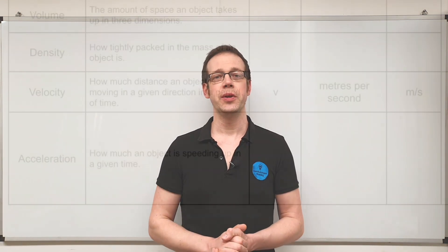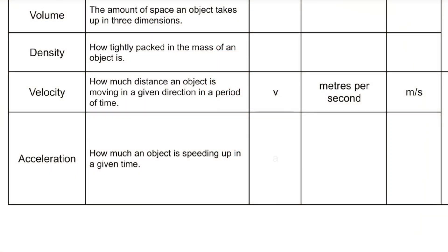Next we've got acceleration. Now we can just think of acceleration as being the change in velocity of an object over a given period of time. The mathematical symbol that we use for this is a lowercase a. The unit that we use is meters per second per second, so in other words it's how much of the velocity is changing every second. Now the unit symbol that we use for this is quite interesting because it's meters per second but then we put a little squared symbol above the second there. So you've got meters per second squared.